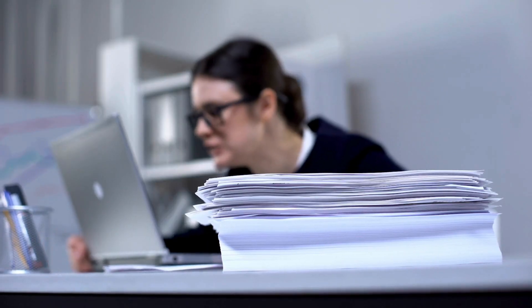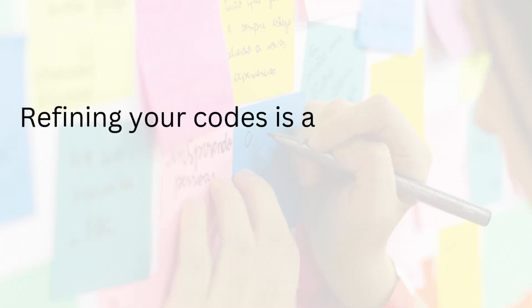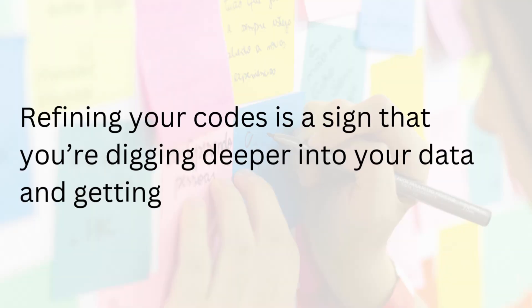Be okay with letting your codes develop and change as your understanding deepens. A code that seemed fantastic at first might seem redundant later, or you might realize two codes are saying the same thing. That's not a mistake — it's progress. Remember feeling like you want to throw it all in the bin and start over? There will absolutely be moments like that. When that happens, step back and remind yourself: refining your codes is a sign you're digging deeper. Save a version of your earlier coding as a safety net so you can experiment without fear. This refining process is messy, but it's where the magic happens — so embrace the mess.